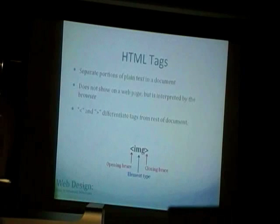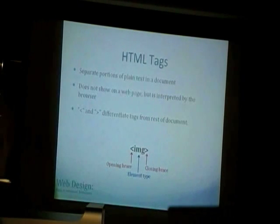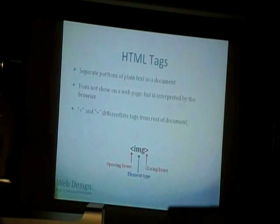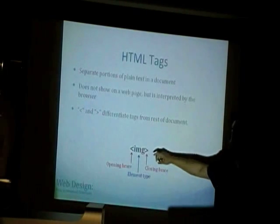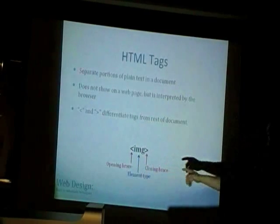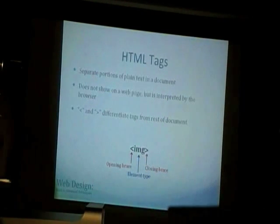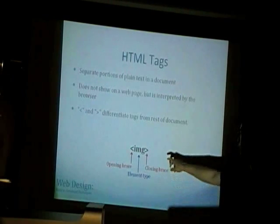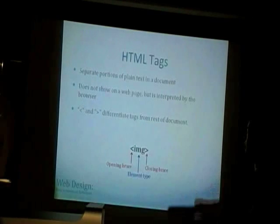In HTML, in order to annotate certain pieces of text, you have to wrap them in what we call HTML tags. Tags are really just a simple construct, and they usually are formed by having the type of tag in the middle — in this case, we have an image tag. Sometimes there's a header tag, a table tag, an anchor tag — and it's enclosed by an opening and closing brace.